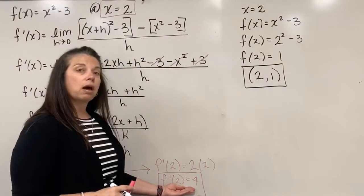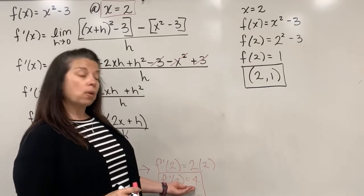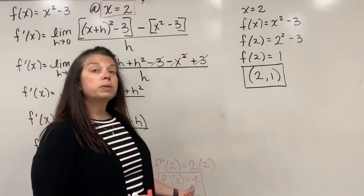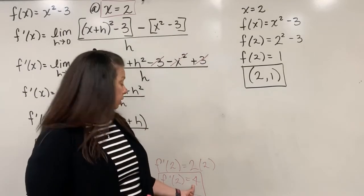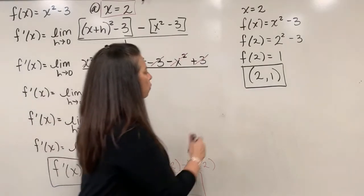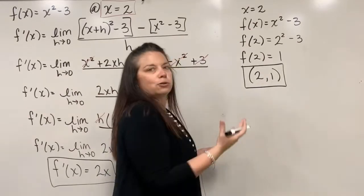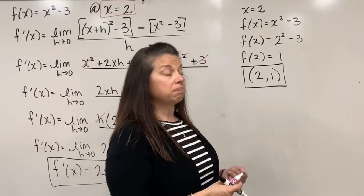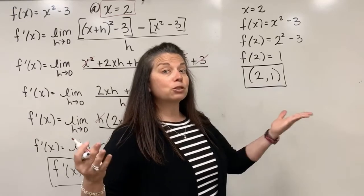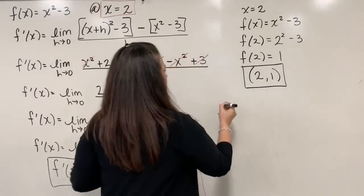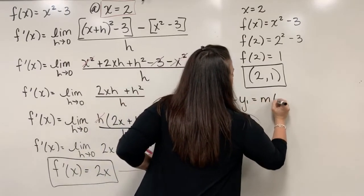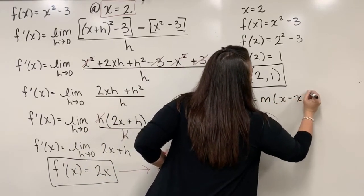And then the 4 that we got from the derivative and evaluating the derivative function at the 2 will also be part of our equation of a tangent line, but that will be the slope part. So we go back to, well, you know, two formulas for an equation of a line, y equals mx plus b, or the point slope formula. I'm going to use the point slope formula, which is y minus y1 equals m times x minus x1.